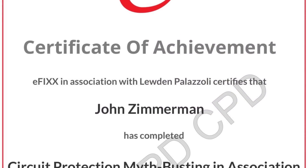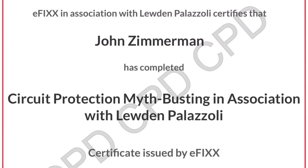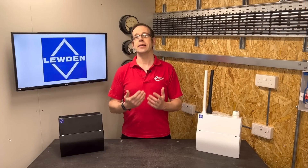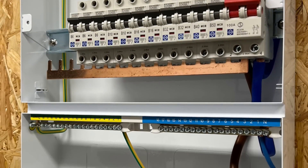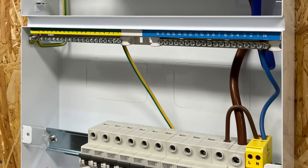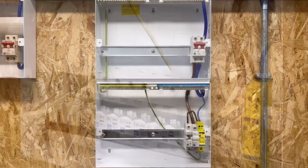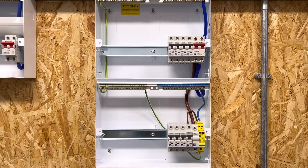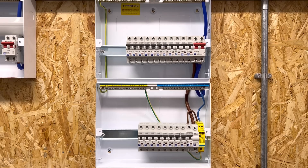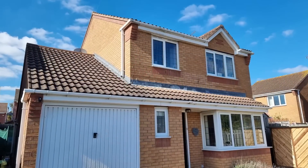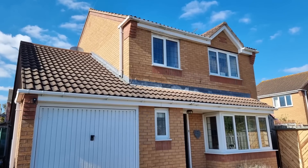This question has come about because we're starting to see more and more consumer units from manufacturers that look like this one from Ludon Palazoli, with two or even three rows of stacked protective devices. That leads us to wonder: if there are more and more circuits being installed, does that mean the maximum demand of our properties is going up? Let's carry out a practical experiment to see how our normal approach to maximum demand actually stacks up.